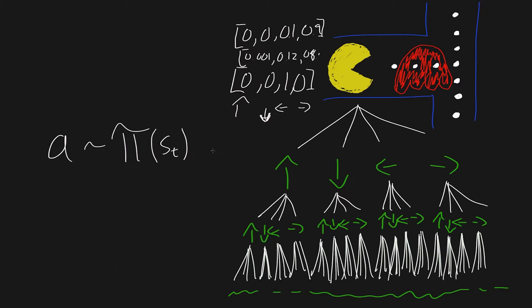In practice, especially in deep reinforcement learning, we use neural networks to parameterize these policies. We're training the weights of the policy specifically. To denote that, you'll use some variable — most often theta, sometimes phi — and this essentially means the output we get is based on those neural network weights.